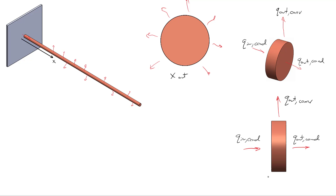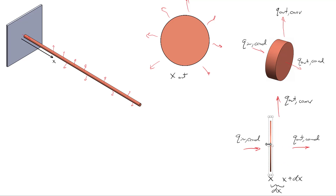We've got a location x and then a location x plus dx, so the entire length of this differential element is dx. We're going to make the length of this go infinitesimally small — as small as you can possibly imagine. Here I've just blown it up for the sake of looking at it, but in reality it's even shorter than that.